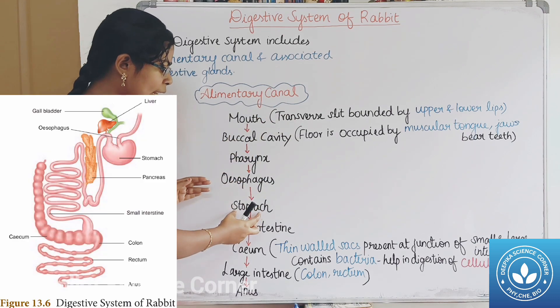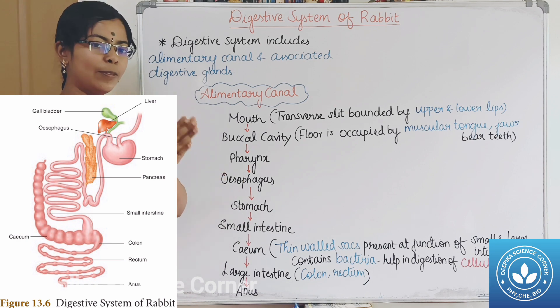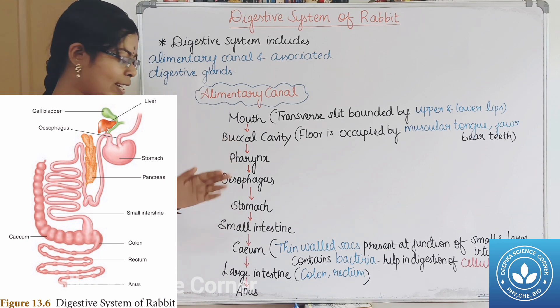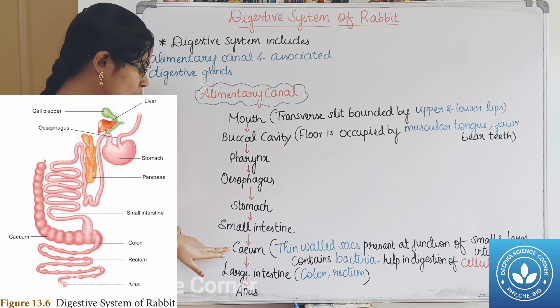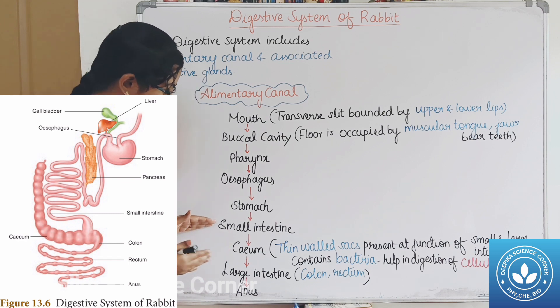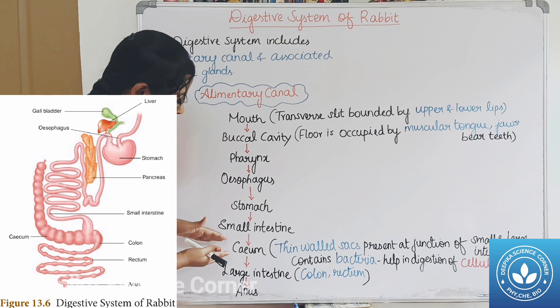The stomach is where digestion occurs. After food digestion, the next part is the small intestine. It then comes to the cecum. The cecum is located at the junction of the small intestine and large intestine.